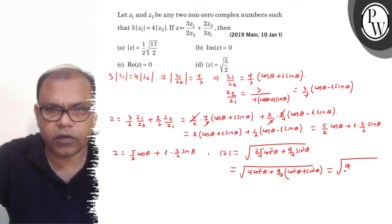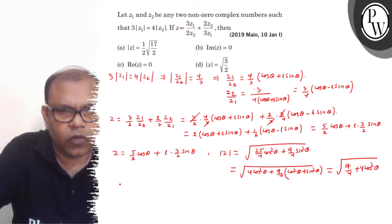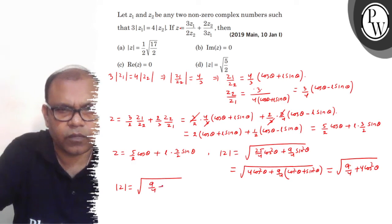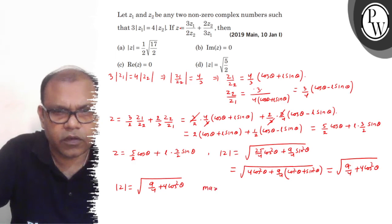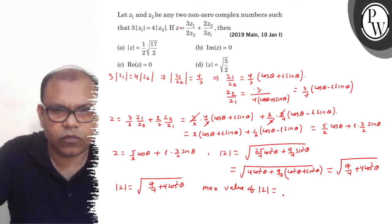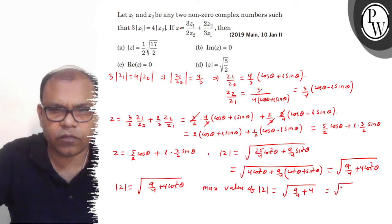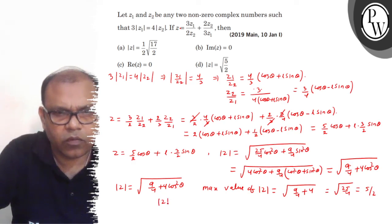So mod Z equals under root of (9 by 4 cos²θ plus 4 cos²θ). The maximum value of mod Z occurs when cos²θ is maximum at 1, giving under root of 25 by 4, which equals 5 by 2. So mod Z maximum equals 5 by 2.